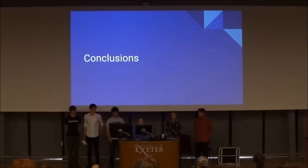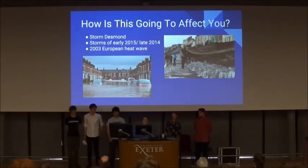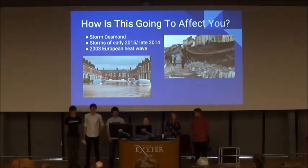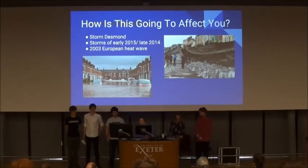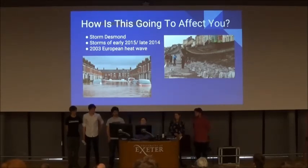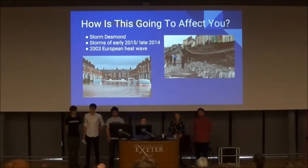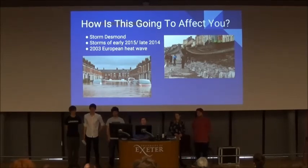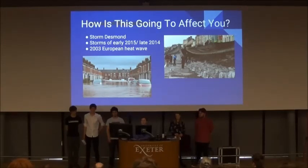So this is all well and good, but it sounds very pure — how is this actually going to affect you, members of the audience? Climate change is real, and it's affecting us all the time. Recently we've been seeing many storms, such as Storm Desmond in Cumbria, and storms in 2015 and 2014. These storms are only going to increase in frequency. If we can make our programs more efficient, we can detect these storms coming earlier, and that means lives will be saved. So if we can mesh the sphere more efficiently, lives will be saved.